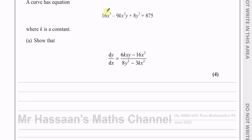If I differentiate 16x³ with respect to x, I get 3 times 16 which is 48x². You multiply by the power and take one from the power.